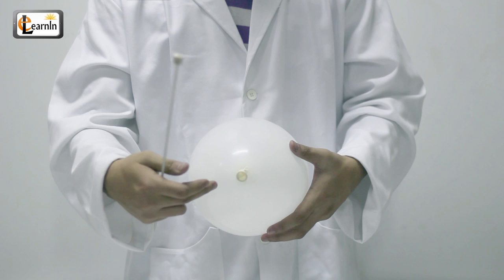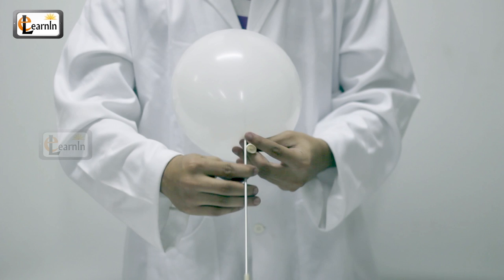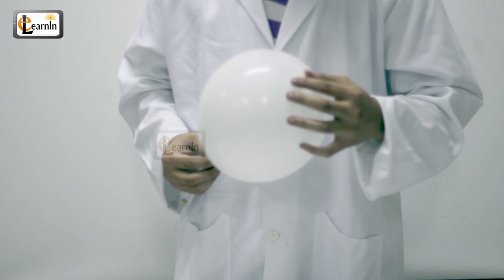Now gently insert the skewer with a soft twisting motion into the end of the balloon beside the knot. Continue pushing and twisting the skewer until the tip emerges from the other end, opposite the knot.